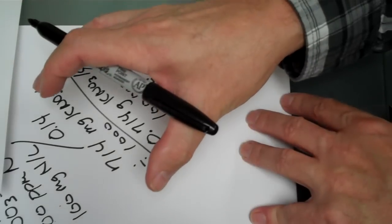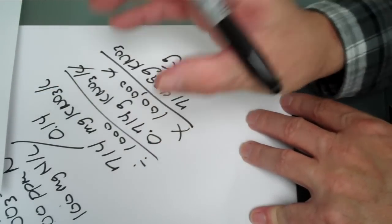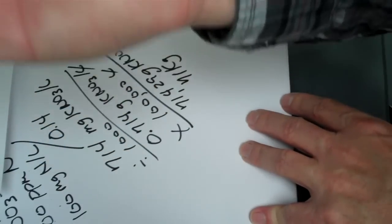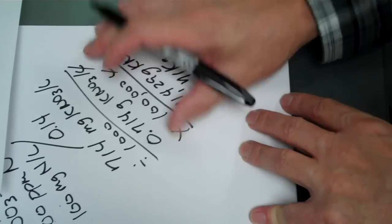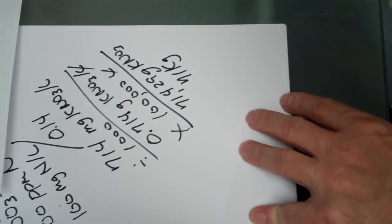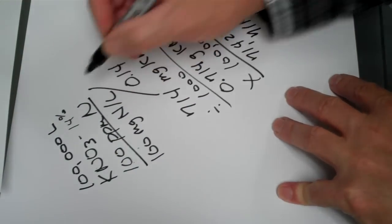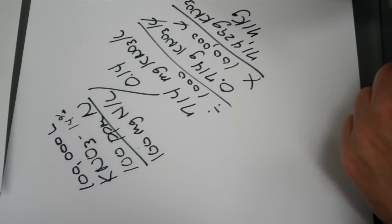So 71 kilograms of KNO3 into that stock tank, bring that up to 1,000 liters, run it through a 1 to 100 injector. And what's coming out of the end of that hose, or however we're irrigating, would be a solution that would contain 100 parts per million nitrogen.